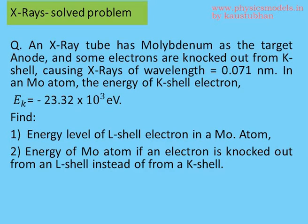Inside the molybdenum atom, the electrons in the K-shell have an energy E_K which is given as -23.32×10³ eV. We need to find the energy level of electrons in the L-shell and the energy increase of the atom if an electron is knocked out from the L-shell.